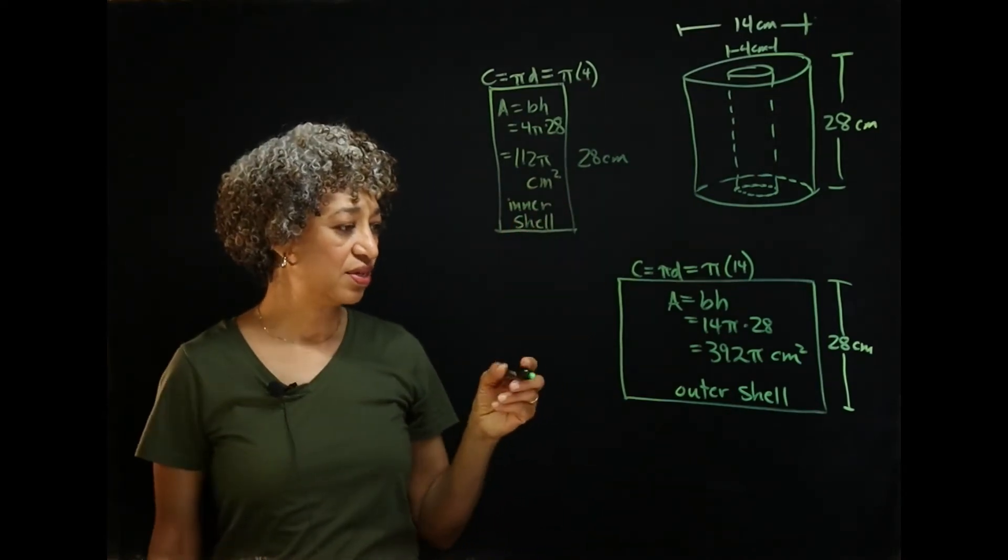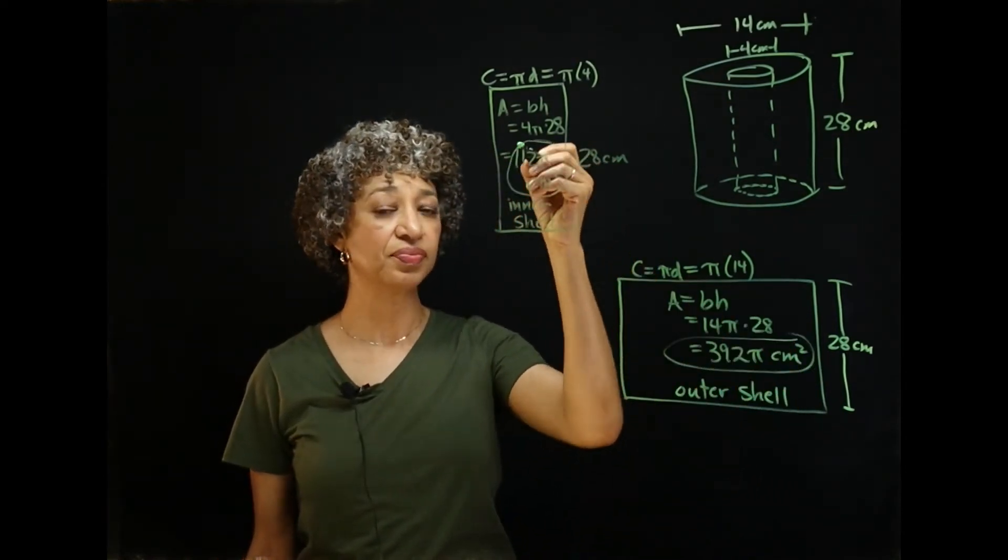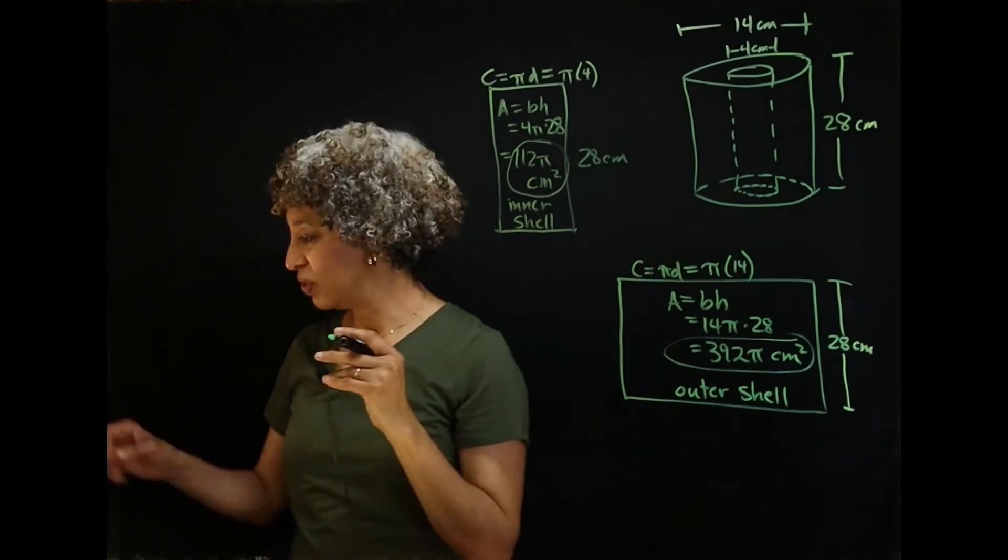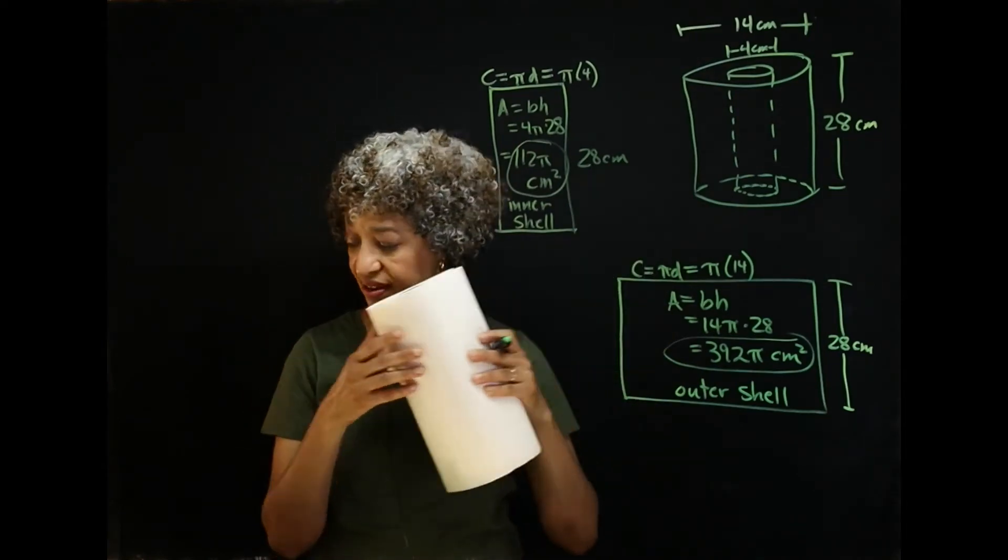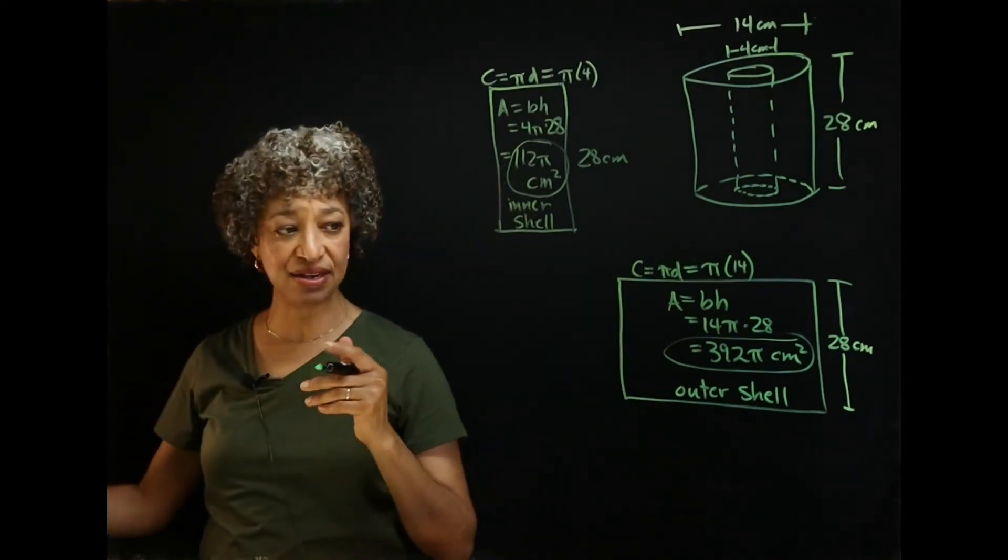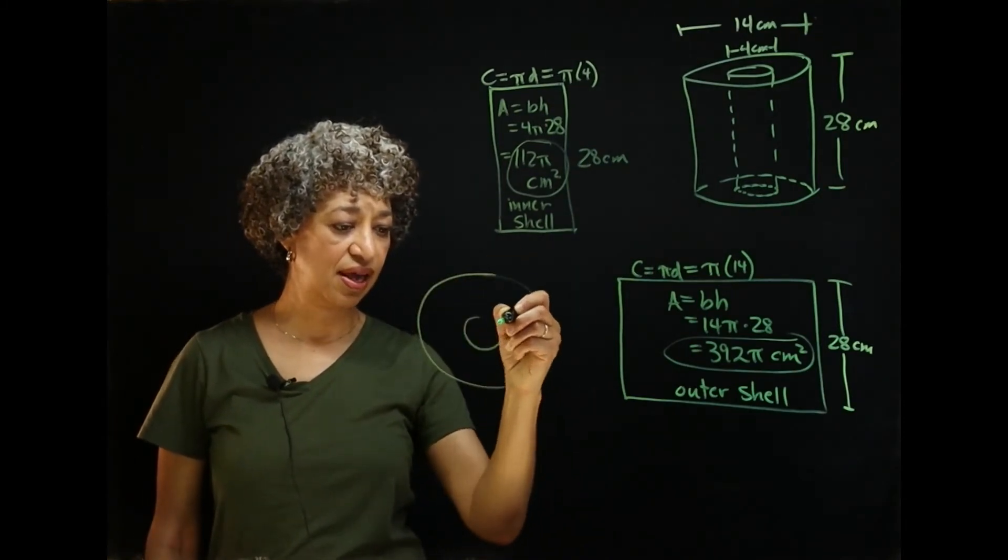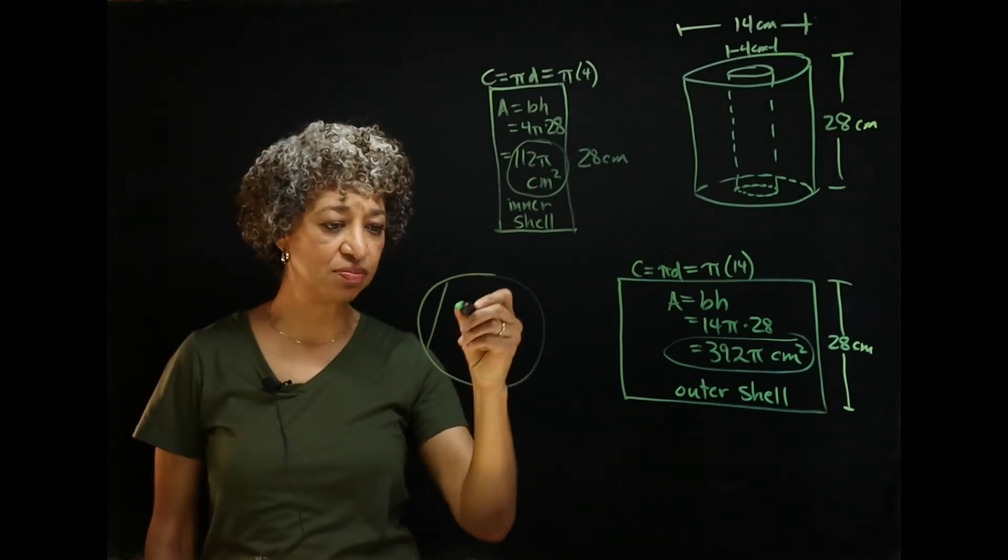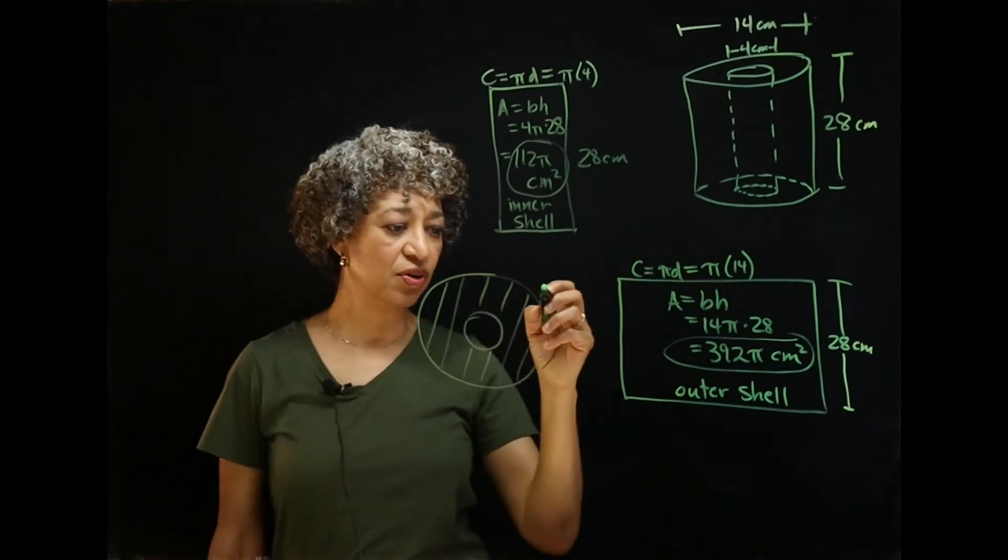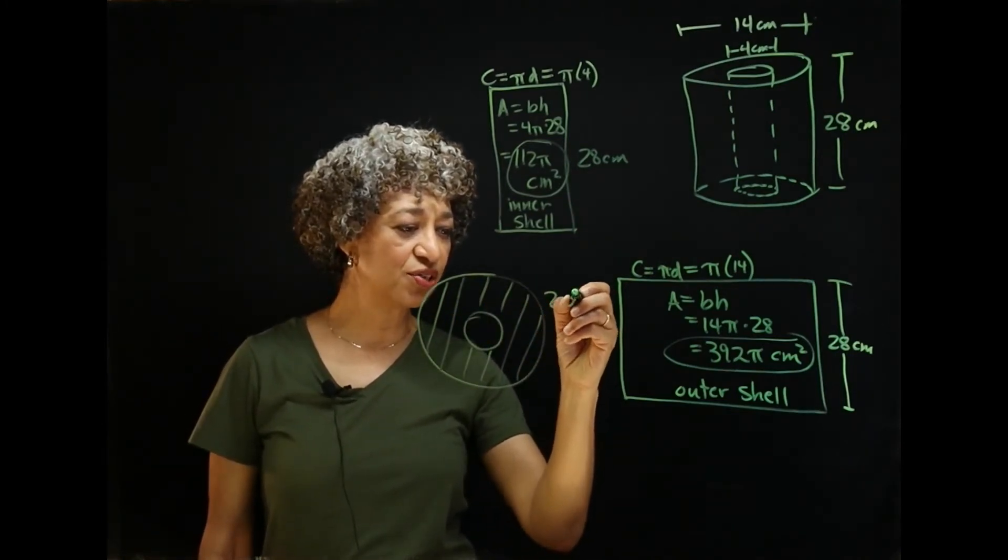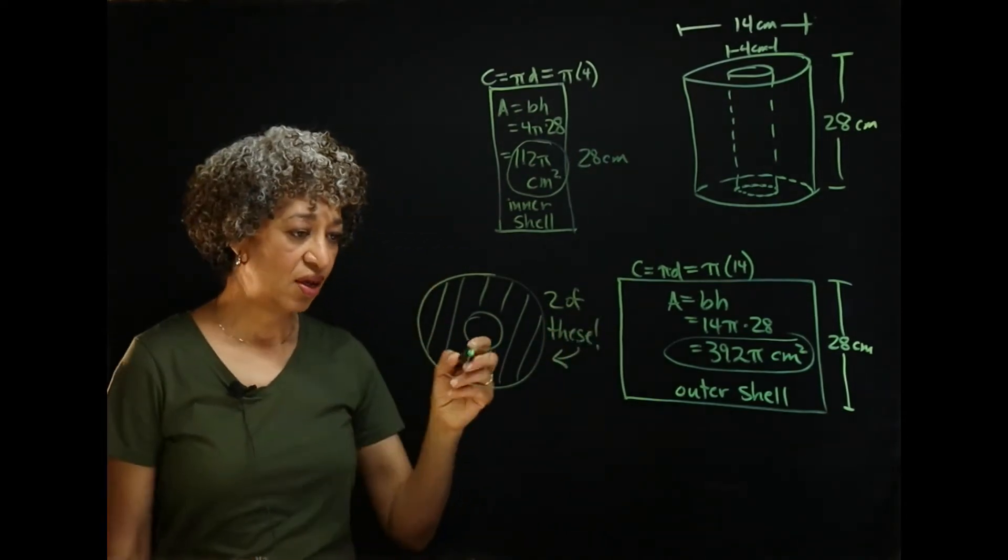All right. So, we have two areas that will be added so far. But that's not all. We still have each end of our paper towel roll. Each end, it's shaped like an annulus. Here's an annulus. An annulus is just the region between two concentric circles. Here is our annulus. And let me remind myself that there are two of these that we're going to need. We need two of these.